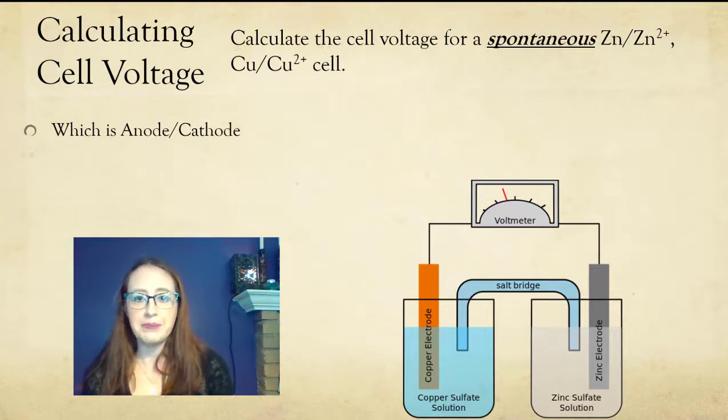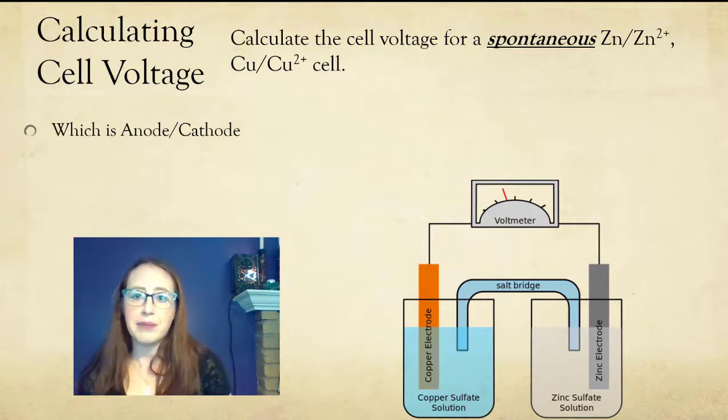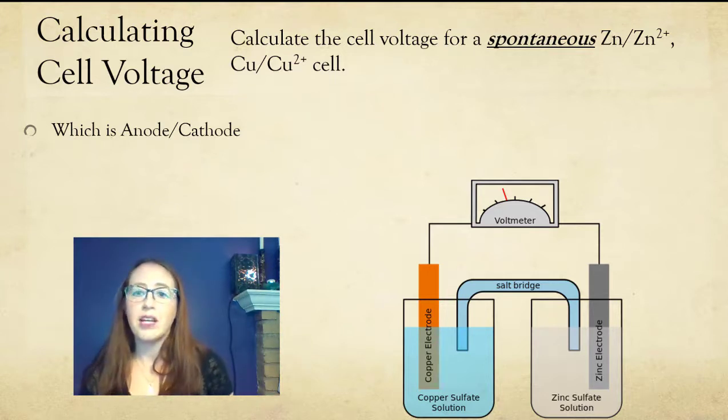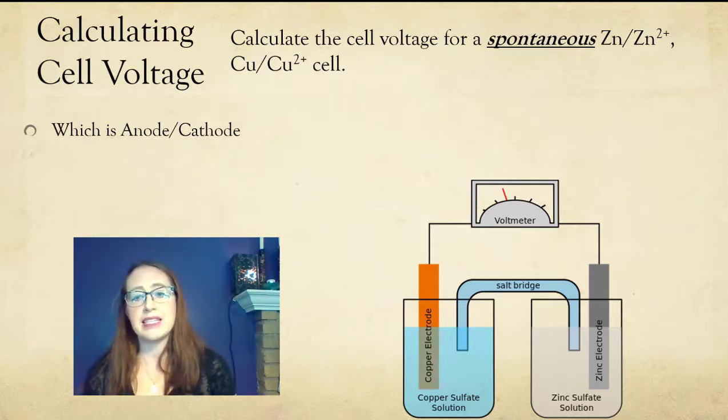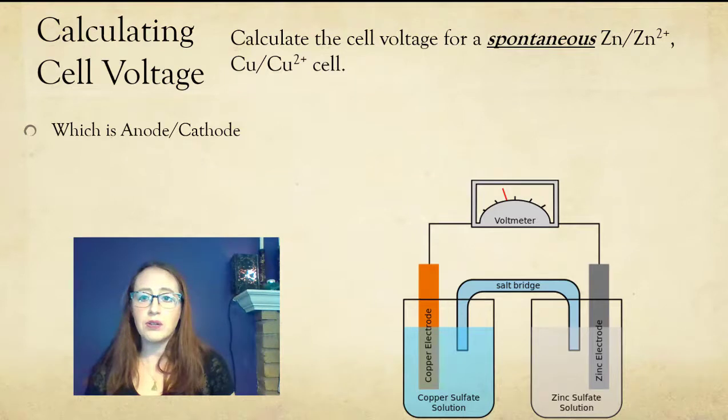Let's look at an example. In this example, I want you to determine, for a given spontaneous cell, I tell you that it's spontaneous. What is the anode? And what is the cathode? The key word to help you do this is that it is a spontaneous cell. And so we know that it has to be a positive voltage.